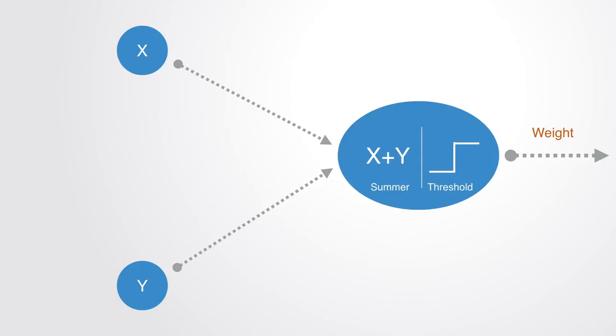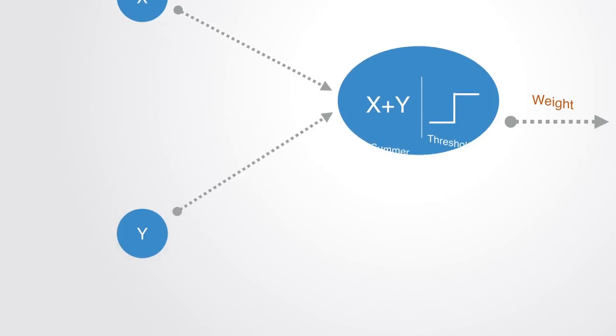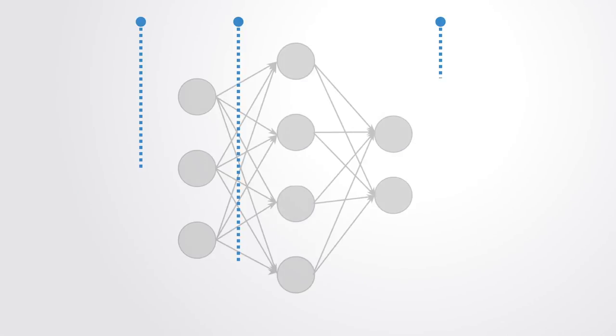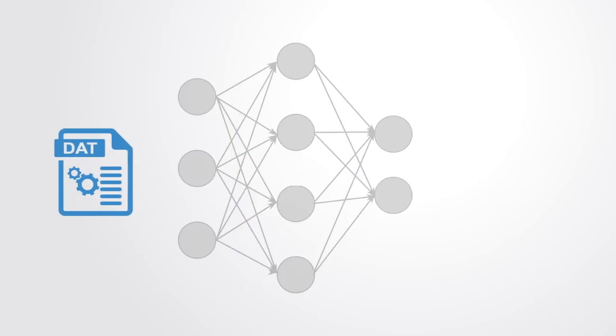Typically, neurons are organized in layers. Different layers may form different kinds of transformations on their inputs. Signals travel from the first input to the last output layer, possibly traversing multiple layers in between. The input layer contains those units of artificial neurons which receive inputs from the outside world on which the network will learn or process.